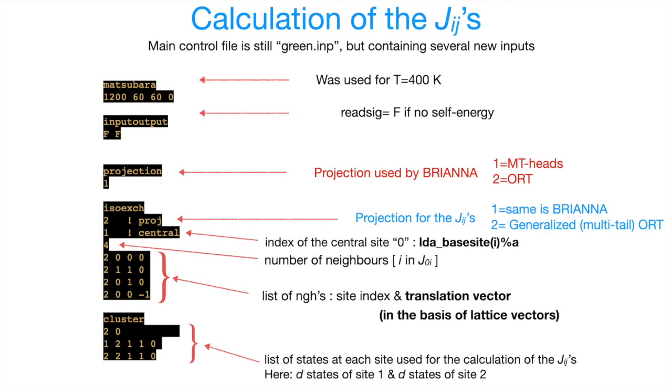To calculate the JIJs, we have to create the green.imp file, and it has to contain several entries. Well, first of all, we need to set up the Matsubara mesh. So this will be used to integrate the JIJ expression. This is a reasonable choice for the default temperature. And as you can see, we only calculate first 60 Matsubara points. And in the rest of 1200 Matsubaras, we only calculate 60 of them, and the rest will be interpolated.